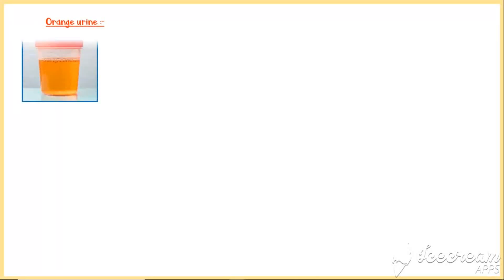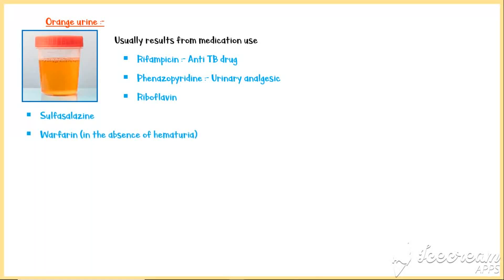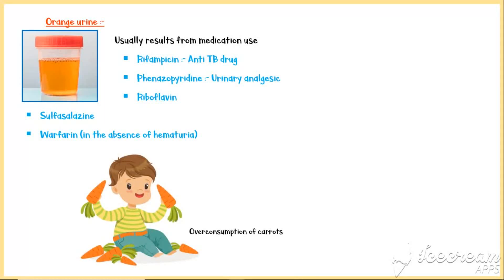Orange urine usually results from medication use. Most common agents that cause orange urine are rifampicin, which is an anti-tuberculosis drug, and phenazopyridine, which is a urinary analgesic. In addition, riboflavin, sulfasalazine, and warfarin in the absence of hematuria can lead to orange urine. Overconsumption of carrots is another benign cause of orange urine.